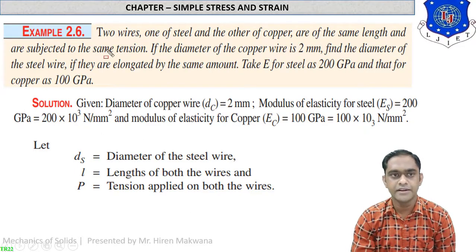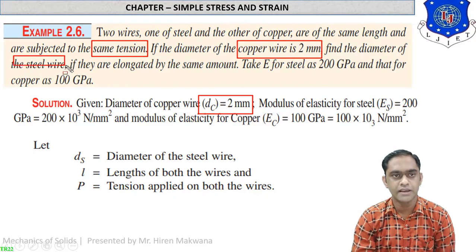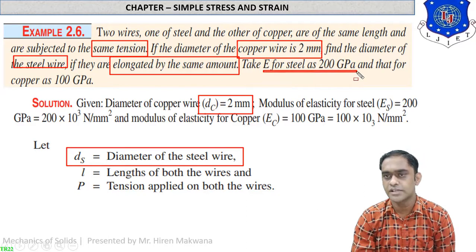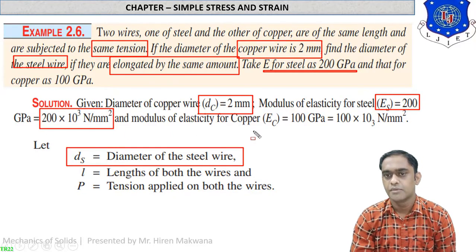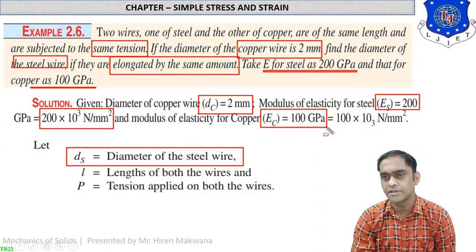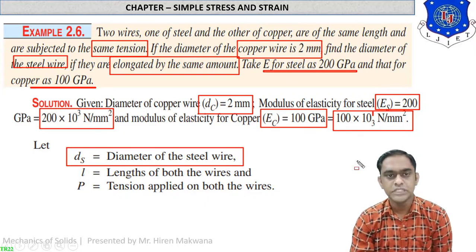In example 2.6, two wires — one of steel and one of copper — are of the same length and are subjected to the same tension. The diameter of the copper wire d_c = 2 mm. We have to find the diameter of the steel wire d_s, given that both are elongated by the same amount. E for steel = 200 GPa = 200 × 10³ N/mm², and E for copper = 100 GPa = 100 × 10³ N/mm².